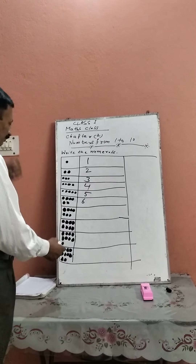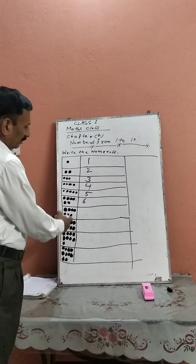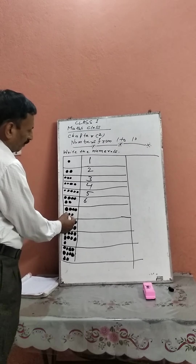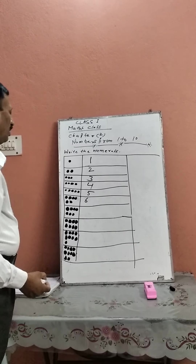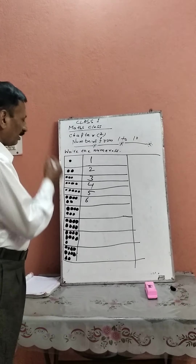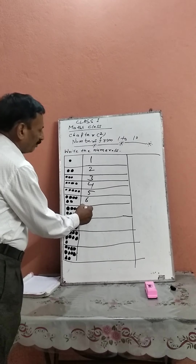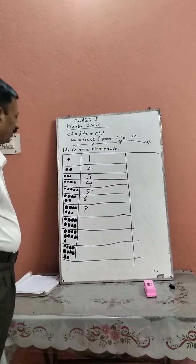Next, there are seven — 1, 2, 3, 4, 5, 6, 7 — objects in the box and you should write the number 7.